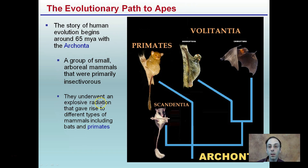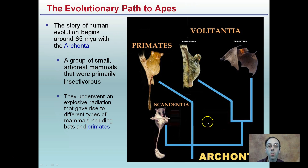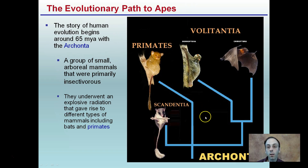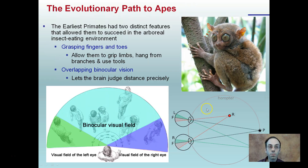When I say radiation, we're not talking about nuclear waste radiation. We're talking about radiation in the sense of how they're organized in a cladogram. This radiation means there's a lot of branching occurring — a lot of diversification is a way to think about it.